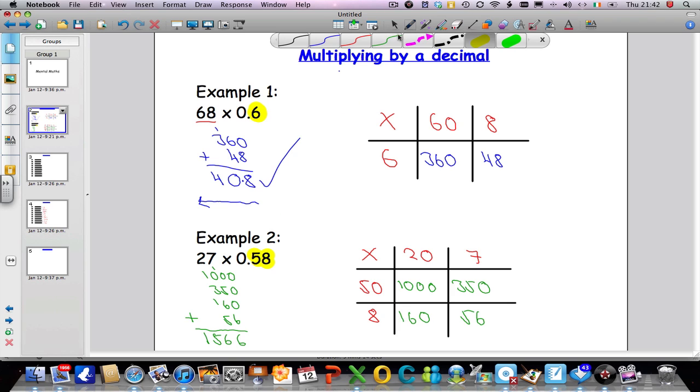So my answer must have 2 decimal places. And again, counting from right to left, 1, 2, and boom. That's where we put our decimal place. So 27 multiplied by 0.58 is 15.66.